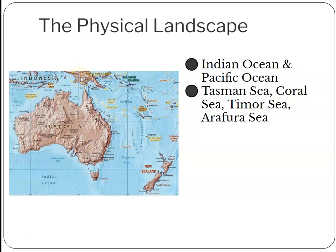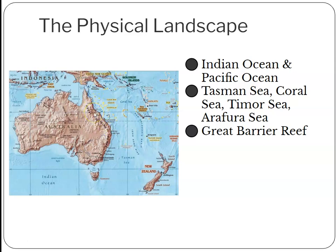Previously, when ocean levels were lower, Papua New Guinea and Australia were actually connected, which we'll see reflected in similarities in animals found here. We have the Great Barrier Reef, a coral reef off the northeast coast of Australia — you can see it from space. The Great Barrier Reef is a very popular tourist destination, and coral are organisms that are seriously at threat as our oceans get warmer.